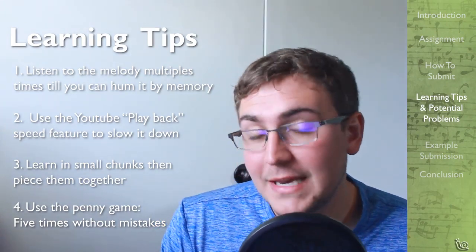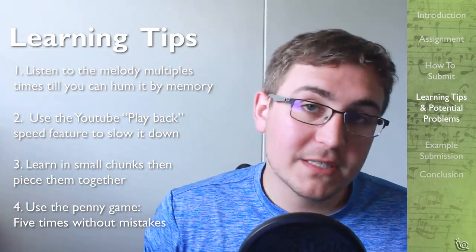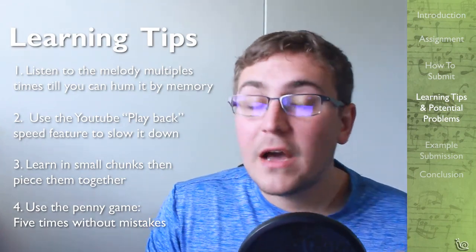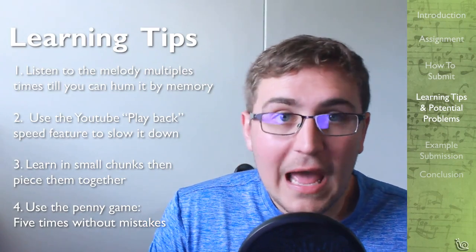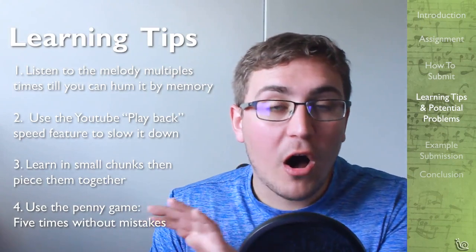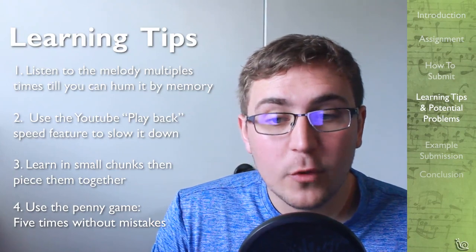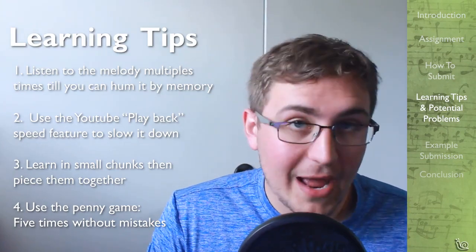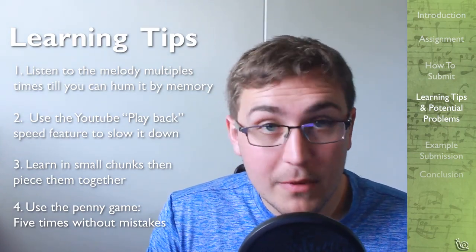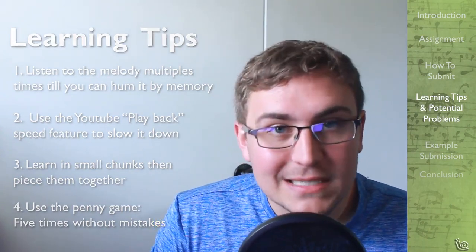Lastly, I recommend using the penny game. This is where you take five of any object and place them on your bed or music stand. Every time you play it correctly, you move one from the left to the right. Once you get all five items to the right, you can move on. However, if you've played it four times correctly and on the fifth time you play it incorrectly, move all five items back and restart from the beginning. This is going to make sure that you are playing it perfectly correct. Always make sure to be focusing on correct pitch, rhythm, articulation, and tone. Remember, if you practice sloppy, you get good at sloppy — so make sure you practice excellence.